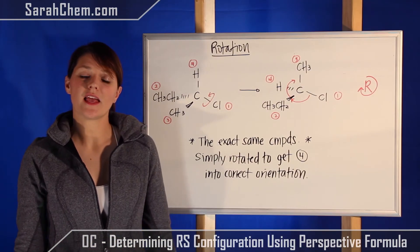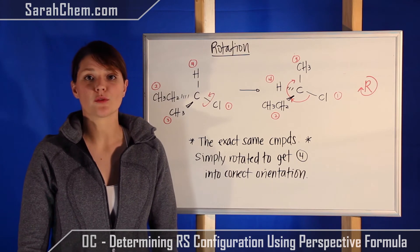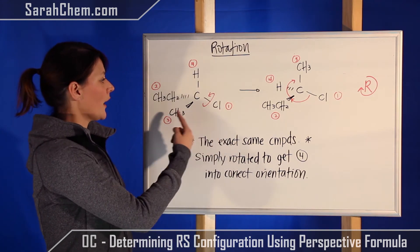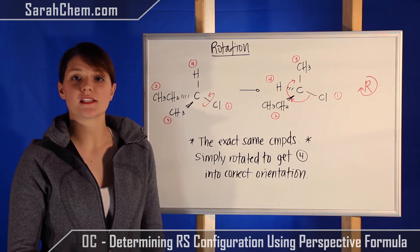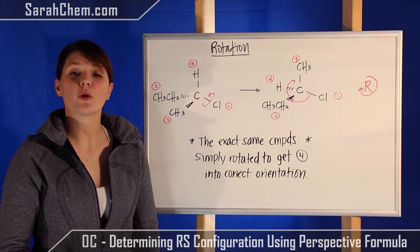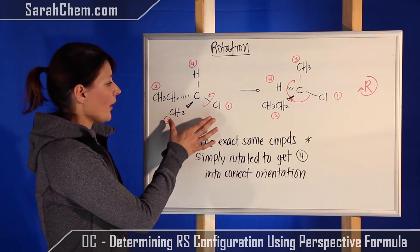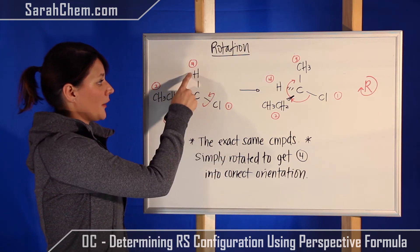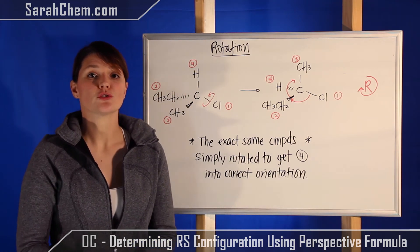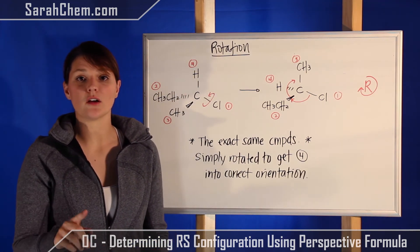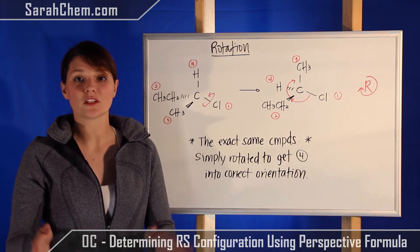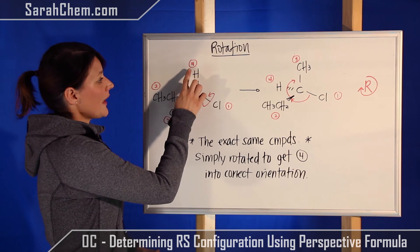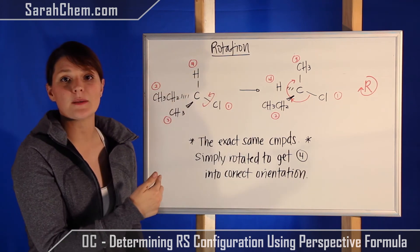Now let's look at a case where group four is not where you need it to be. Just as before, you're given a compound and you rank the priorities of each group, and now you stop to see where is group four. Group four has to be on the hatched wedge, however it is not placed there. It needs to be here but we find it's up there. At this point, do not just figure out the arrow and then switch it. This will lead you to the wrong answer many times. What you want to do is make this group four get to that position.